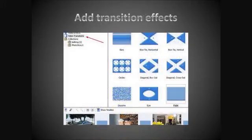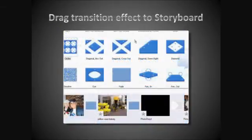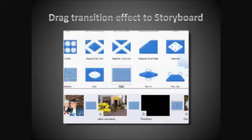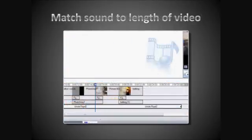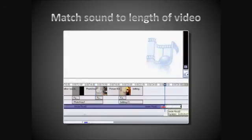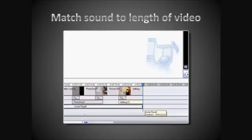All the various transition effects can be added just by dragging them into storyboard or timeline view and placing them between your pictures. You can see how easily that's done. Matching and adjusting the sound to the video length is also done by dragging the handles. You can be very precise with the length of the sound and use fade in, fade out, and increase or decrease the volume as well.